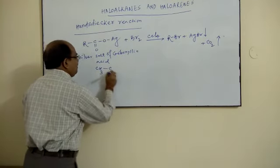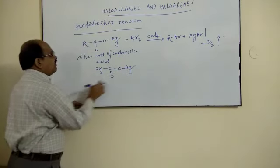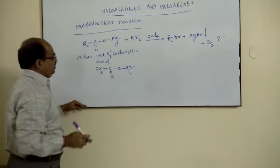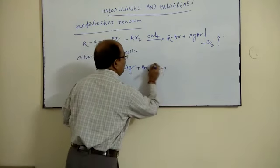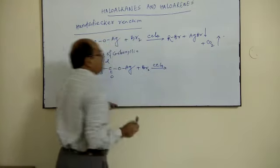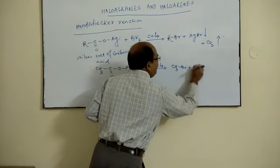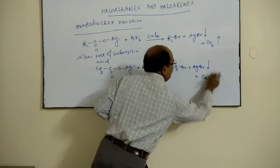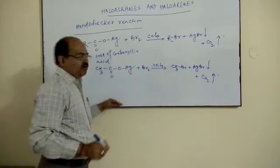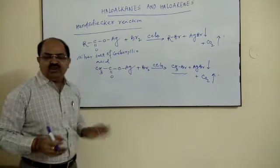for example, if it is your CH3COOAg, that is silver salt of acetic acid, and then if you react with bromine in carbon tetrachloride, the product will be your methyl bromide, AgBr will precipitate out and CO2 gas will be released. So this is the best method for the preparation of bromo-alkane.